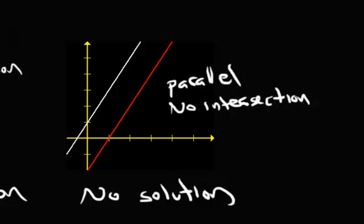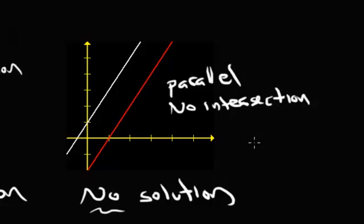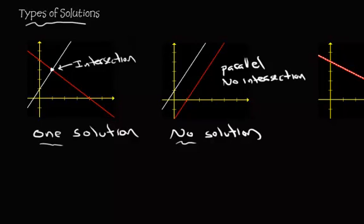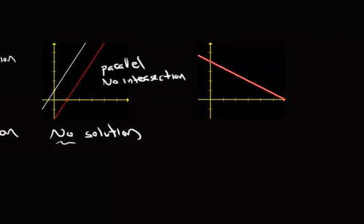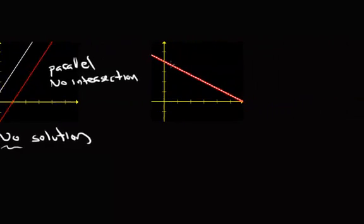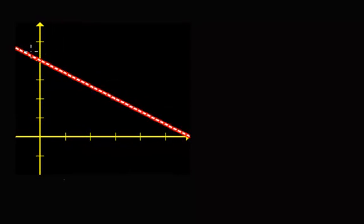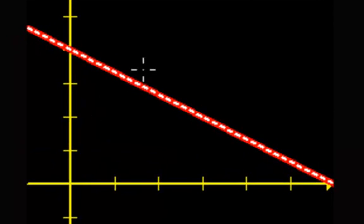Alright, so far we have one solution, no solution, and then my third. Okay, so let's move over. Here is our third type. It might be hard to see, so I'm going to zoom in much closer than I did with the previous two.